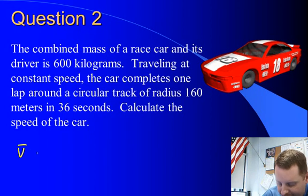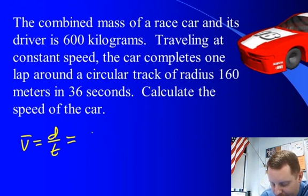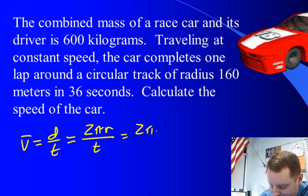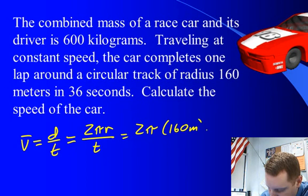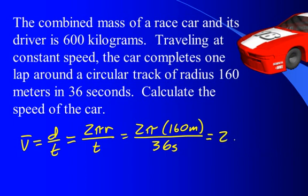Speed of the car. Let's take the average speed, it's going to be distance traveled divided by time. Since it goes one time around the track, the distance traveled is just one circumference, or 2π times the radius over t, or 2π times radius 160 meters over 36 seconds, for a grand total of about 27.9 meters per second.